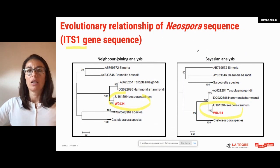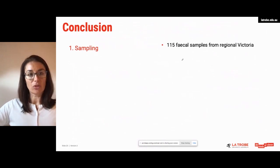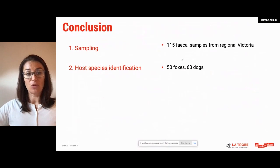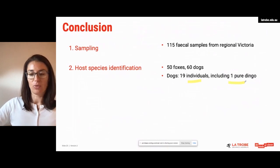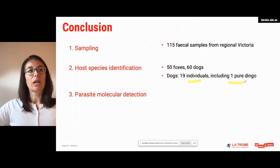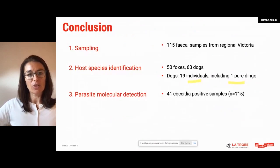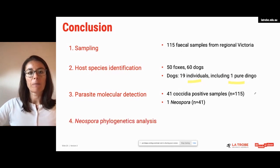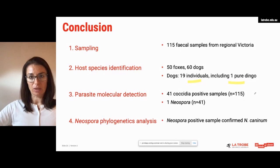In conclusion, we collected 115 fecal samples from regional Victoria. On host species identification through genetic analyses, we identified those samples as belonging to 50 foxes and 60 dogs, of which among the dog samples we identified 19 individuals including one pure dingo. On parasite molecular detection, we identified 41 coccidian-positive samples out of 115, with one Neospora sample, leading us to conclude a 6.7% prevalence in Mansfield among the samples analyzed. Our Neospora phylogenetic analysis confirmed they belong to N. caninum parasites.